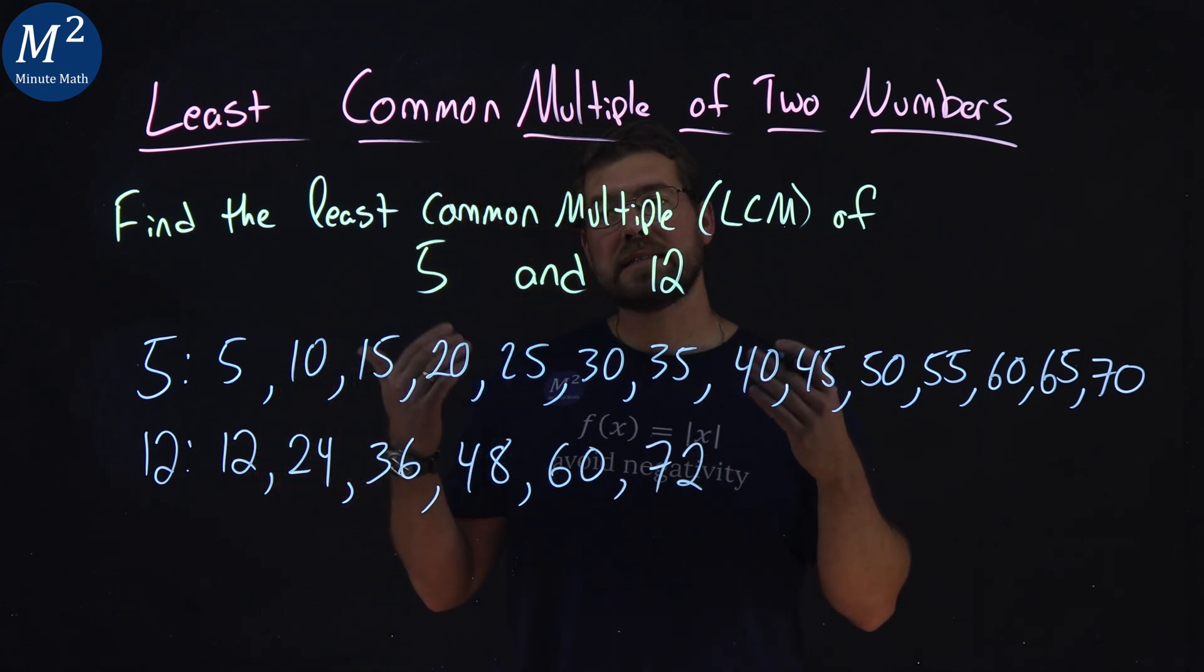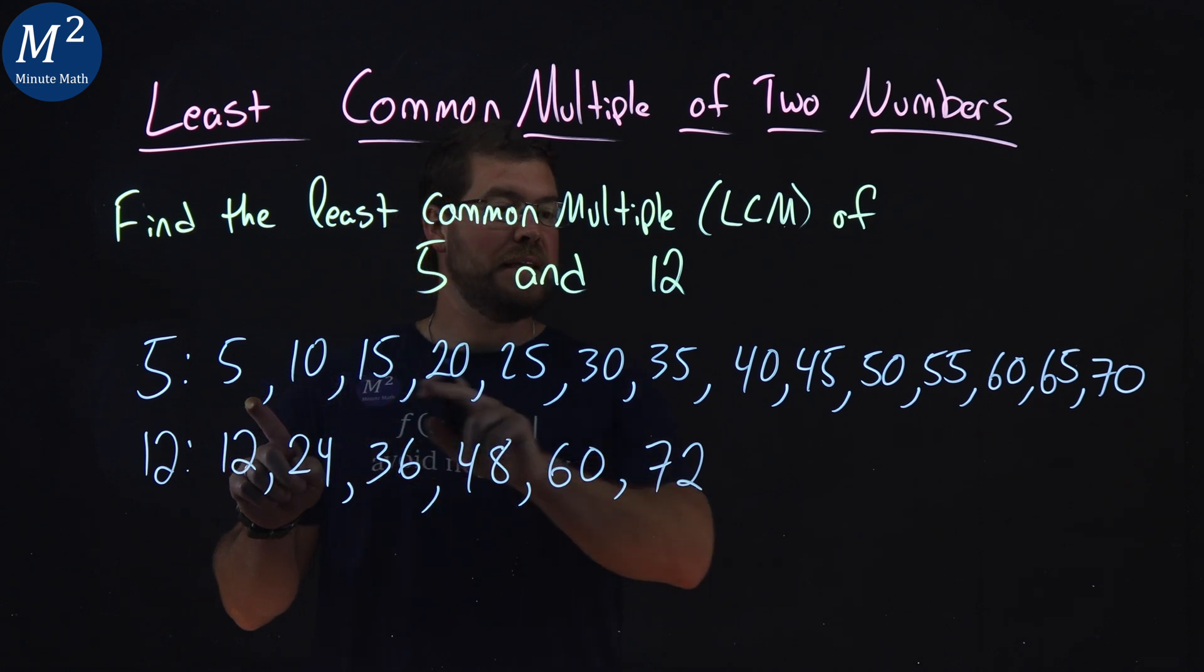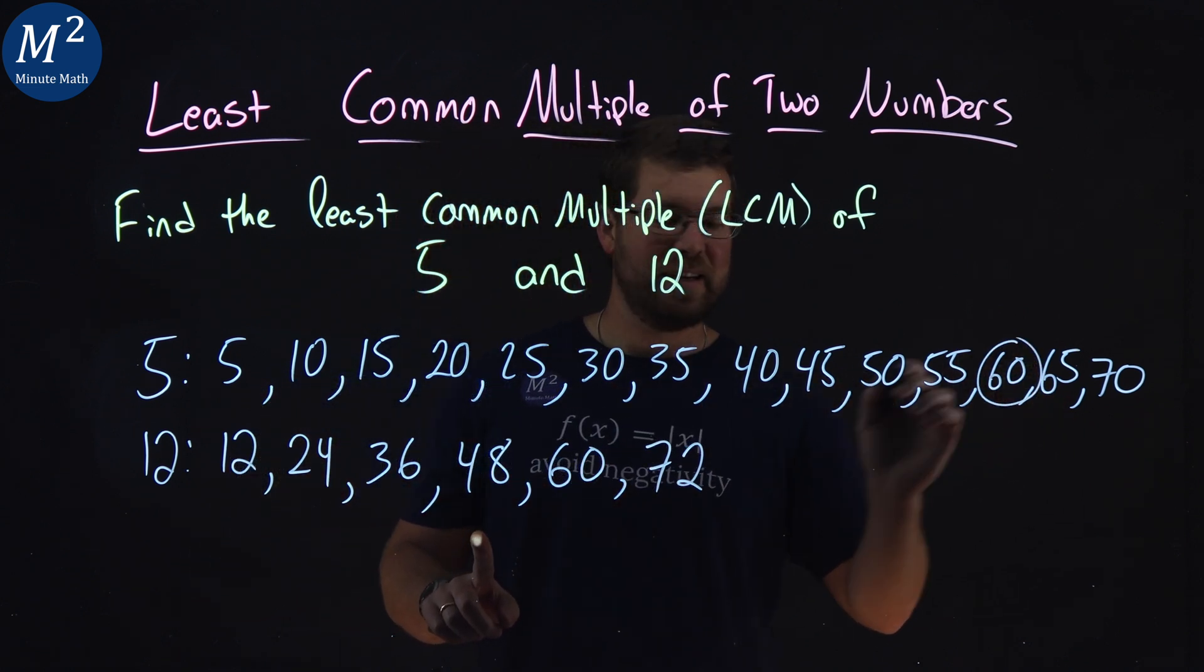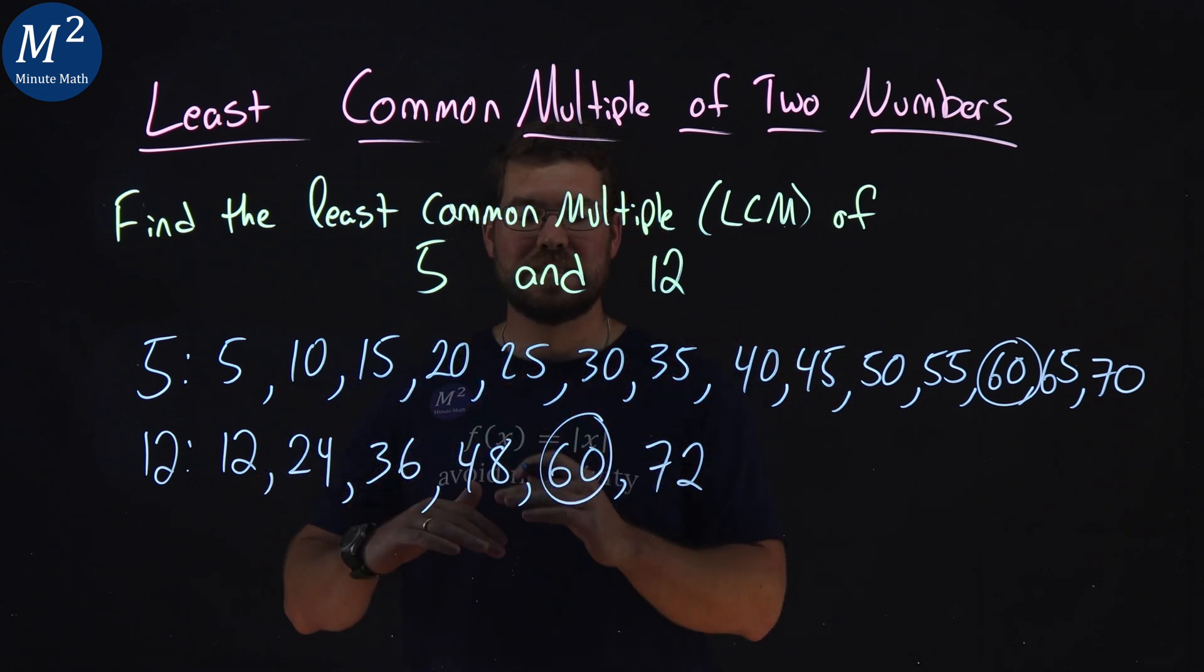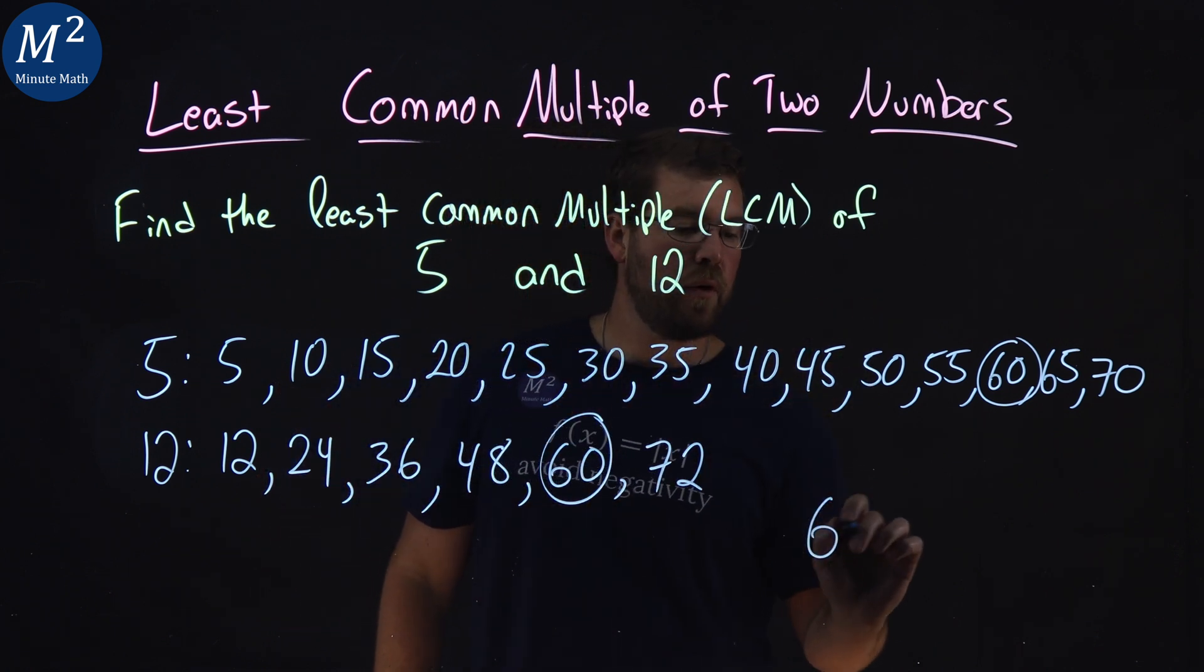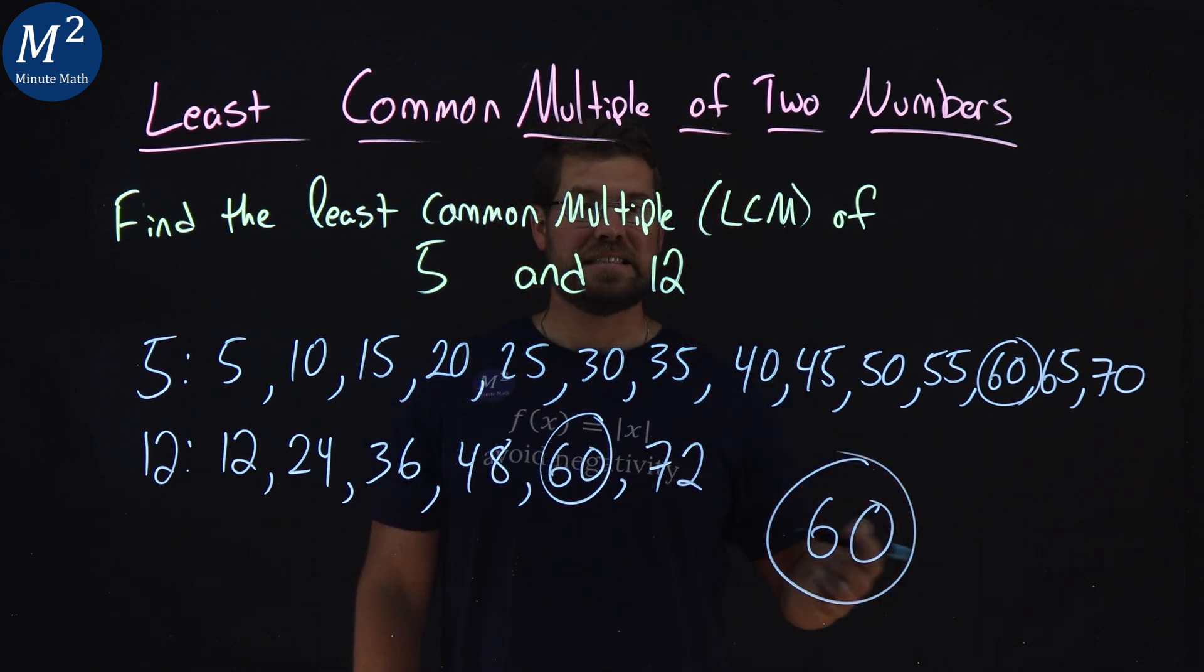But we want to find the least common multiple. That's the least common multiple in both numbers here. And 60 is in both. That's the lowest number that's in both of these sets. So the least common multiple of 5 and 12 is 60.